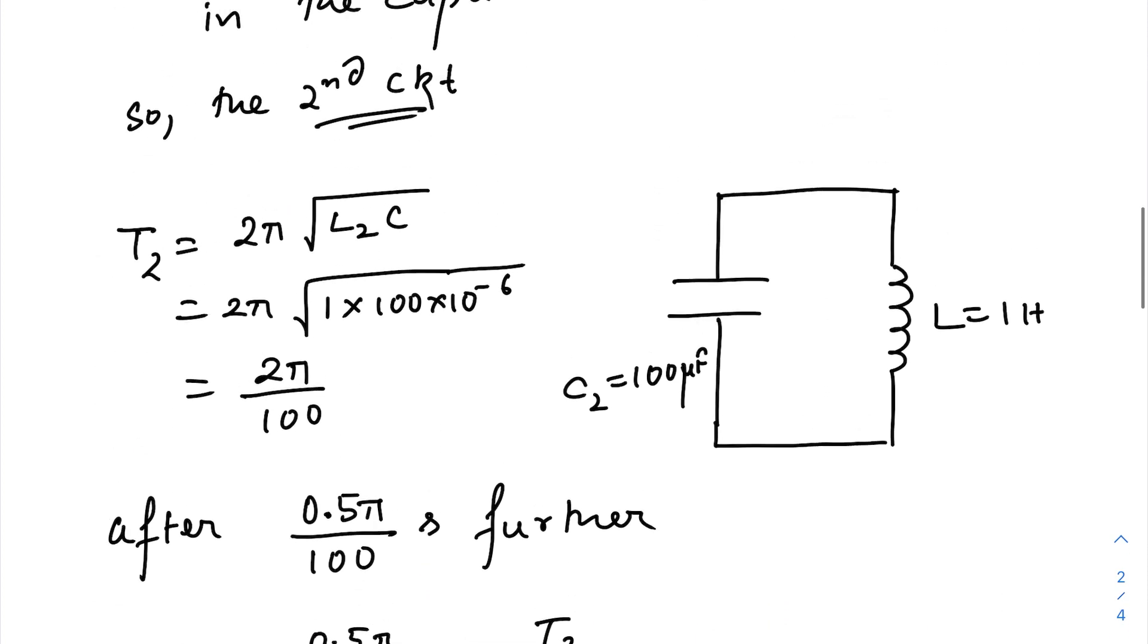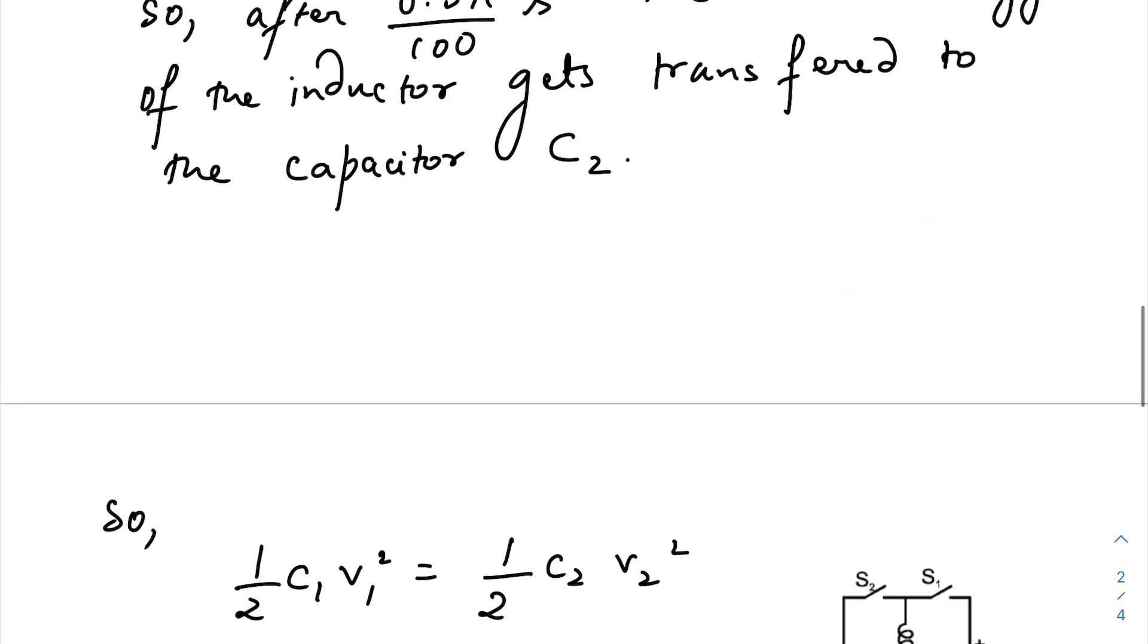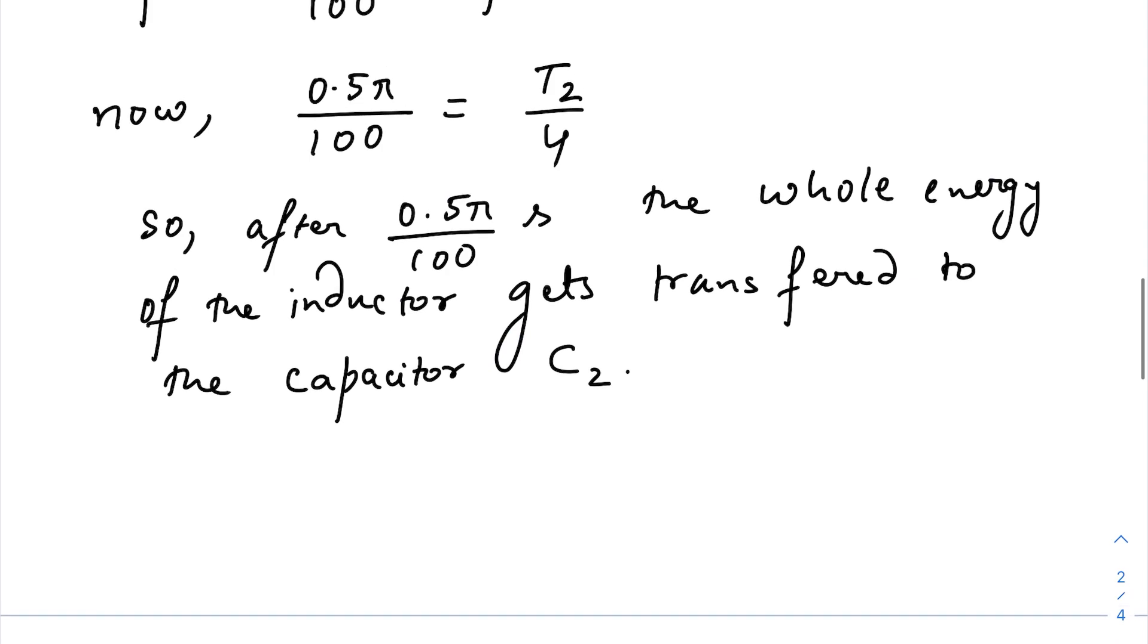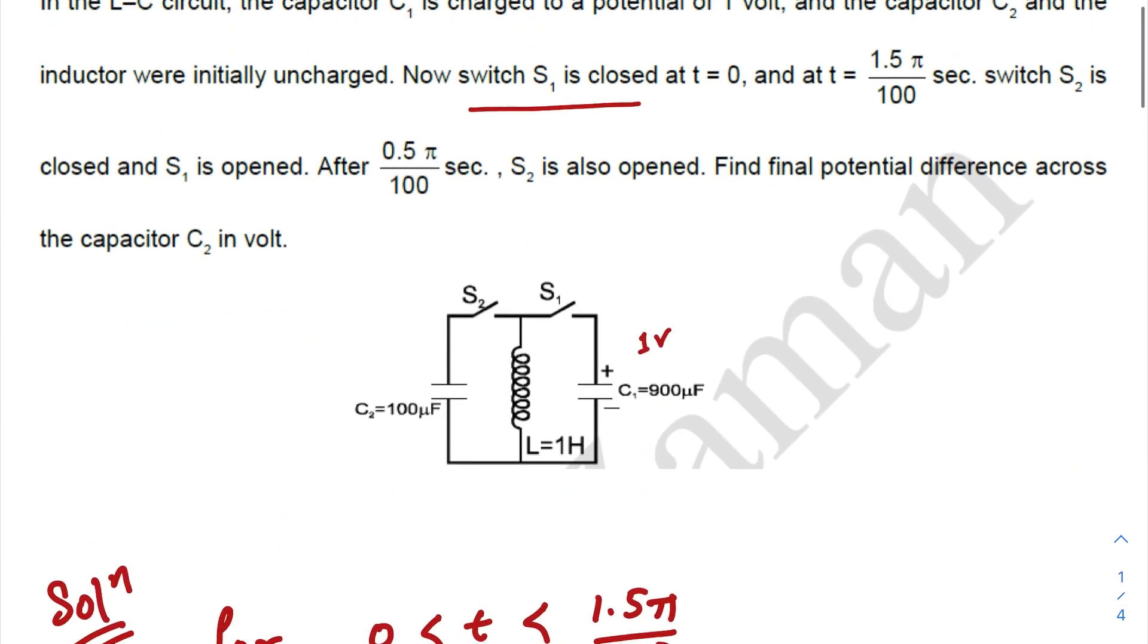So after 0.5π/100 second, the whole energy, of course the same thing will happen, the whole magnetic energy will get transferred to this capacitor. Easy. So now you can easily find out the potential difference across the capacitor C2.